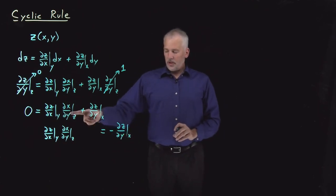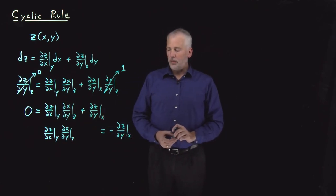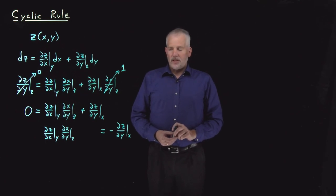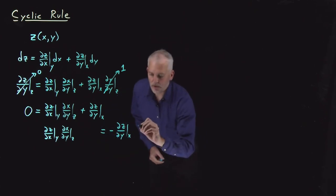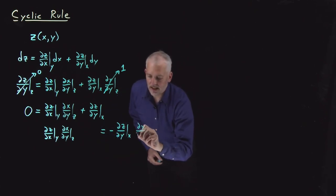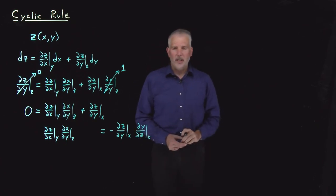So that's the same result as this one, just rearranged a little bit. What I want to do next is do the same thing on both sides of this equal sign, and what I'm going to put on both sides of this equal sign is a ∂y/∂z at constant x. Why did I do that?